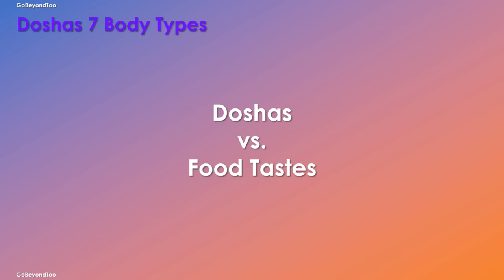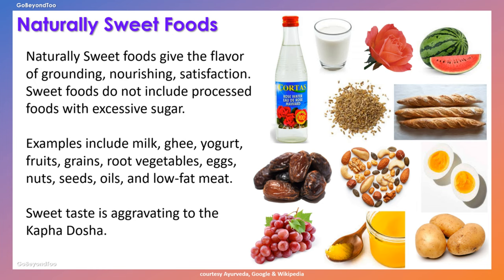Now let's talk about doshas versus the food tastes — which foods promote the different flavors. There are six tastes: sweet, sour, salty, pungent, bitter, and astringent. Sweet tastes give the flavor of grounding, nourishing, and satisfaction. Sweet foods refer to naturally sweet foods, not processed foods with excessive sugar. Examples include milk, ghee, yogurt, fruits, grains, root vegetables, eggs, nuts, seeds, oils, and low-fat meats. Sweet taste is aggravating to the kapha dosha.